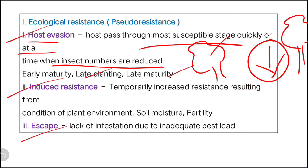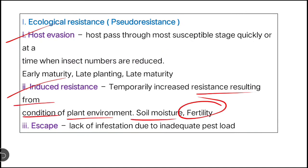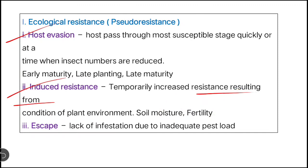Next is induced resistance: temporarily increased resistance resulting from plant environmental conditions — for example, soil moisture and fertility. When mulching conserves soil moisture, or when NPK fertilizer increases fertility, the plant's growth and resistance are temporarily increased. You can thus induce resistance temporarily through these practices. This type of induced resistance also comes under ecological resistance.